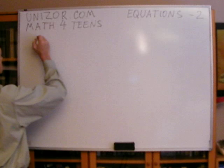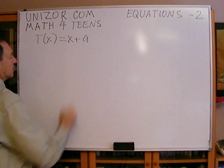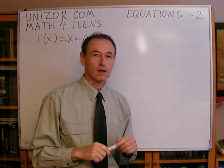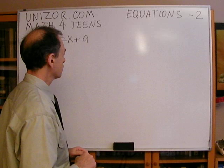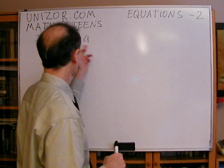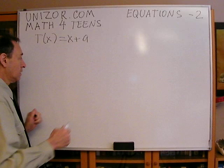As far as invariant transformations go, number one is adding any number. We'll assume our equations involve real numbers and we're looking for solutions among real numbers only, just to make things easier. This is an invariant transformation, and the inverse is subtracting a.